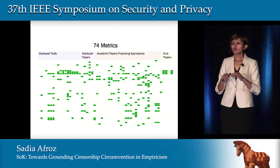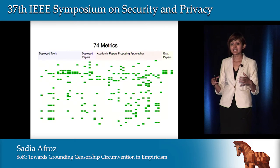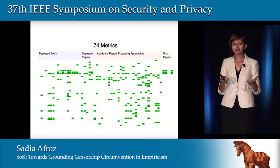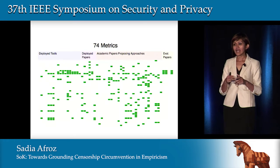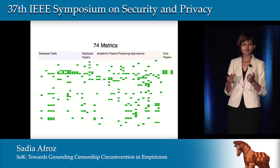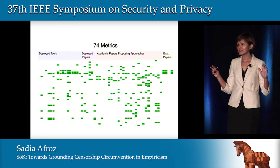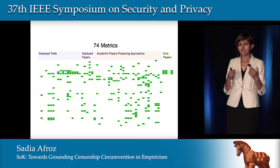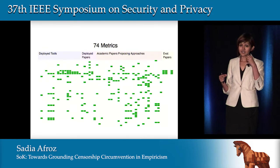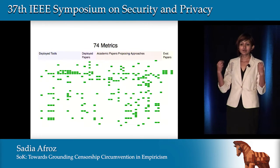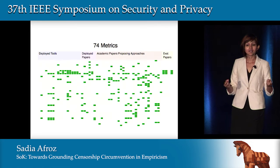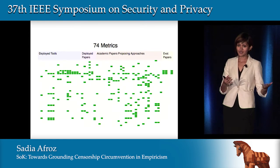We also looked at how systems evaluate themselves to understand how well a tool will work in practice. In the 55 papers, we found 74 different metrics used for self-evaluation. To be clear, we are not comparing two systems on one specific criterion — for example, we're not saying Tool A is faster than Tool B. We're just checking whether both Tool A and Tool B evaluated their connection speed at all. This is an evaluation of the evaluations.